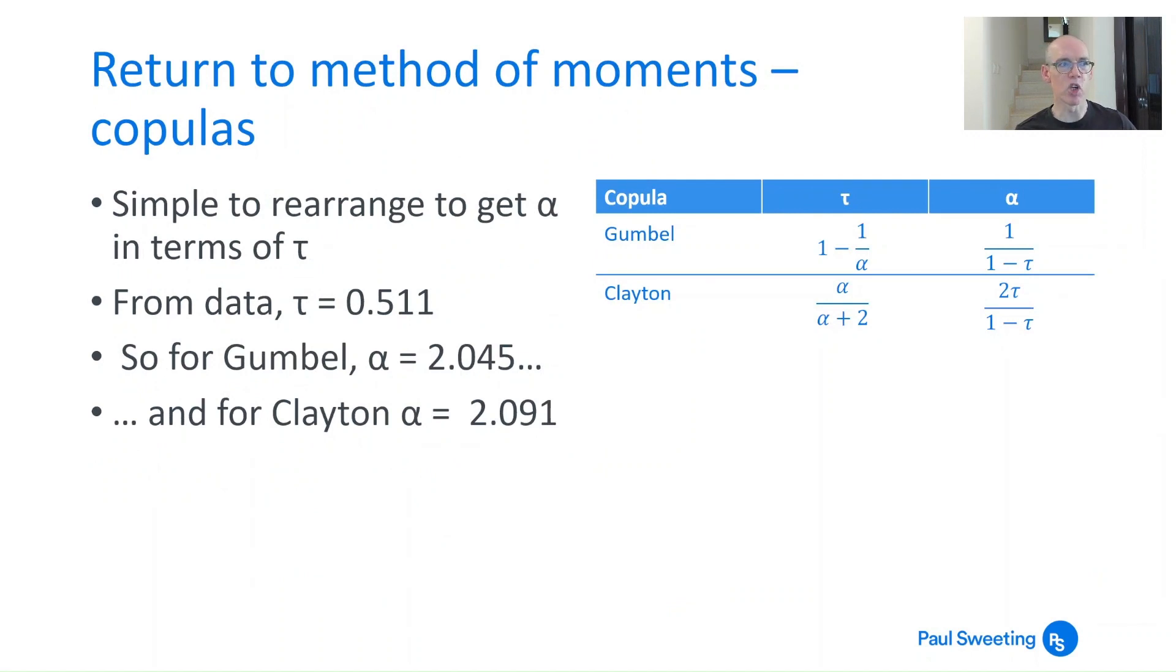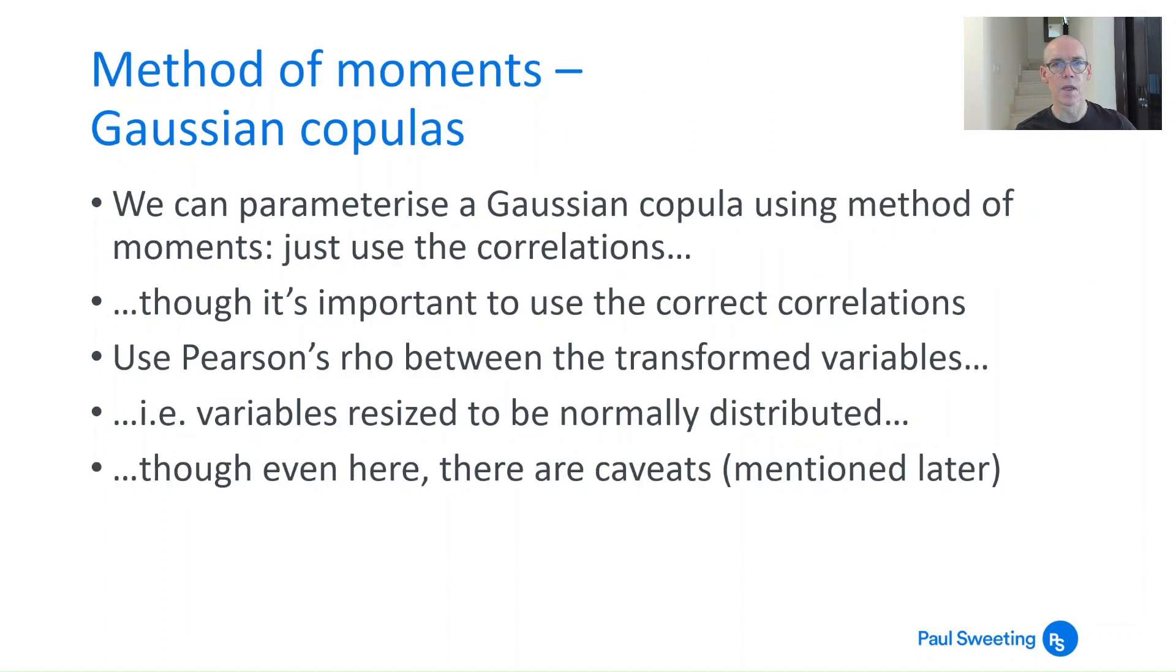Return to the method of moments for copulas. It's simple to rearrange alpha in terms of tau. In the second column here, we've got what tau is in terms of alpha. Just rearrange it and you get alpha in terms of tau. We know from the data before that tau is 0.511. And what that means is, for the Gumbel copula, alpha is 2.045. And for the Clayton copula, alpha is 2.091. So it's a pretty easy calculation.